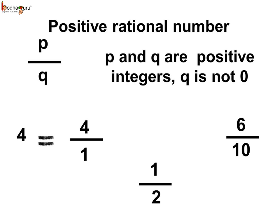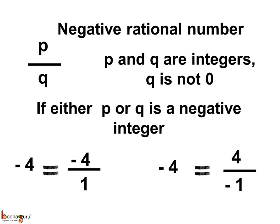Positive integers, positive fractions are situated on the right side of 0 on the number line and are positive rational numbers.